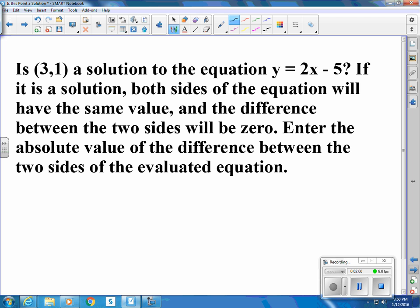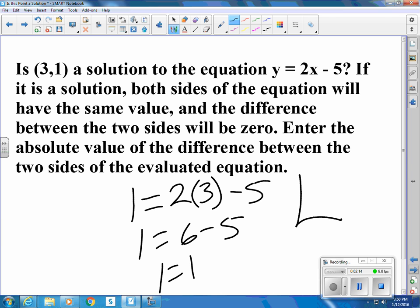For point (3,1) and y = 2x - 5, the y is 1, the x is 3. So, is 1 equal to 6 minus 5? Yes. When we're writing the difference between the two sides of the equation, the difference is zero.